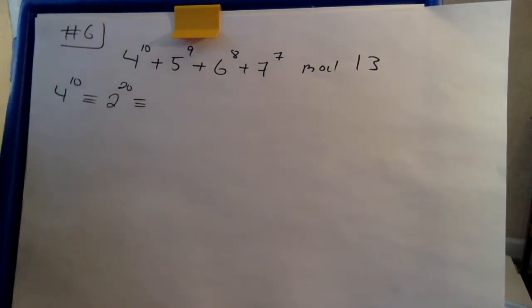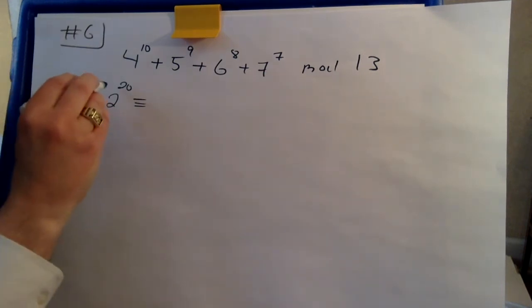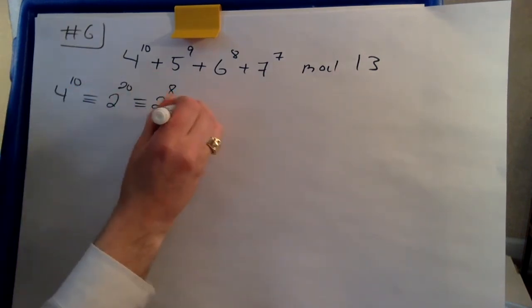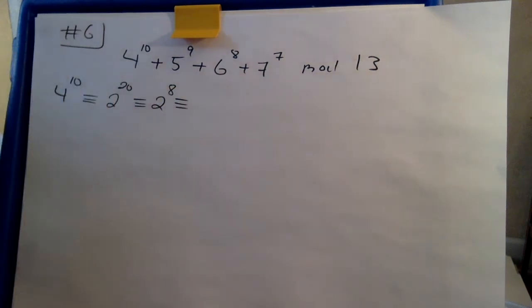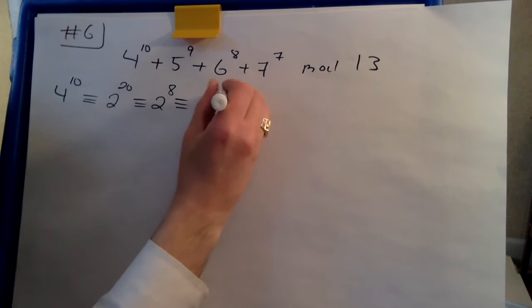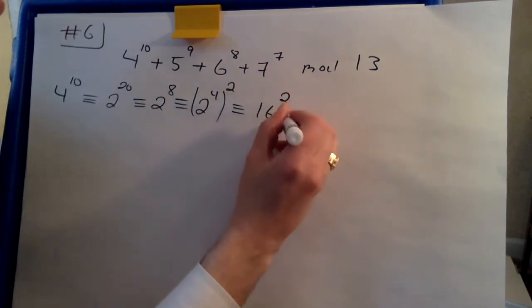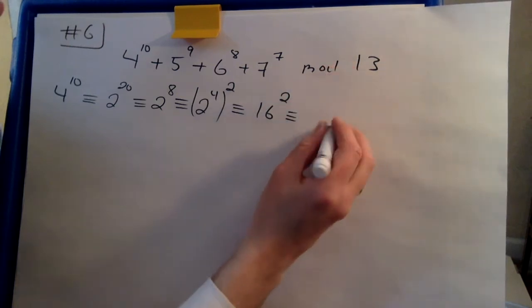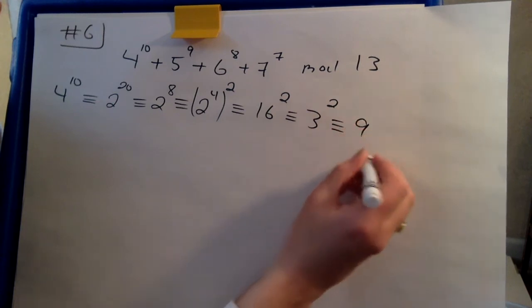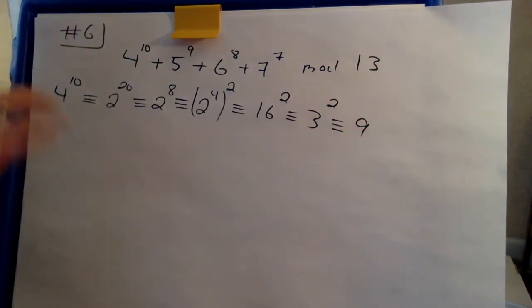And now, you know 13 is a prime. We can use Fermat's theorem. So 2 to the 12 is 1. So 20 minus 12 is 2 to the 8. 2 to the 8, well this is 2 to the 4 squared. So this is 16 squared. 16 and 13 is 3. This is 3 squared so we get 9. And everything here is happening in modulus 13.